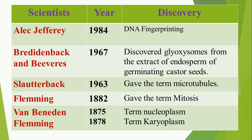Alec Jeffreys in 1984 discovered DNA fingerprinting technology. It was Breidenbach and Beevers in 1967 who discovered glyoxysomes from the extract of endosomes of germinating castor seeds. Slautterback gave the term 'microtubule' in 1963.